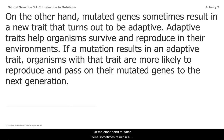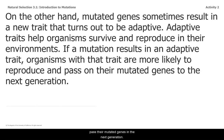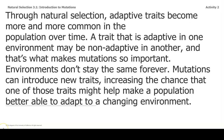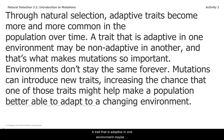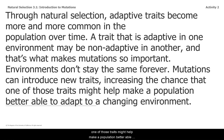On the other hand, mutated genes sometimes result in a new trait that turns out to be adaptive. Adaptive traits help organisms survive and reproduce in their environments. If a mutation results in an adaptive trait, organisms with that trait are more likely to reproduce and pass on their mutated genes to the next generation. Through natural selection, adaptive traits become more and more common in the population over time. A trait that is adaptive in one environment may be non-adaptive in another, and that's what makes mutations so important. Environments don't stay the same forever — mutations can introduce new traits, increasing the chance that one of those traits might help make a population better able to adapt to a changing environment.